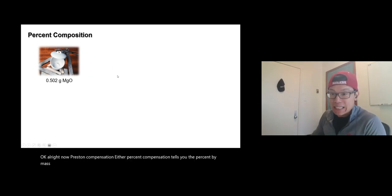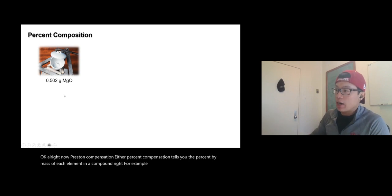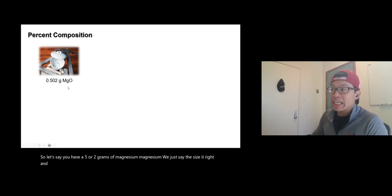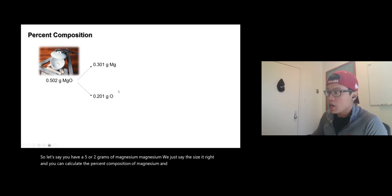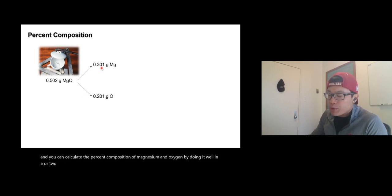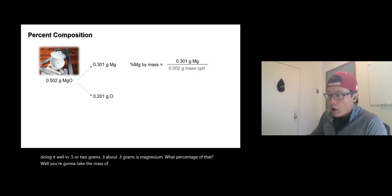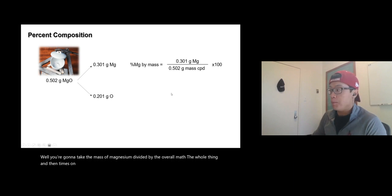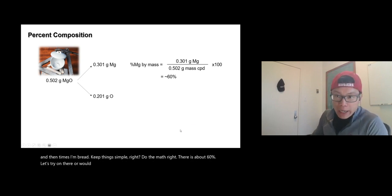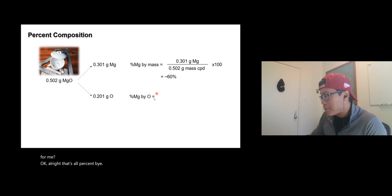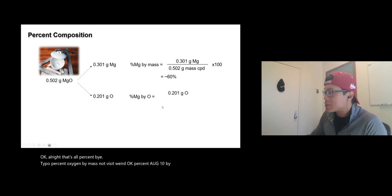Now percent composition tells you the percent by mass of each element in a compound. For example, if you have 0.502 grams of magnesium oxide and about 0.3 grams of that is magnesium, the percent composition of magnesium is: mass of magnesium divided by overall mass times 100 — that's about 60 percent. Try to pause the video and calculate the percent oxygen yourself.